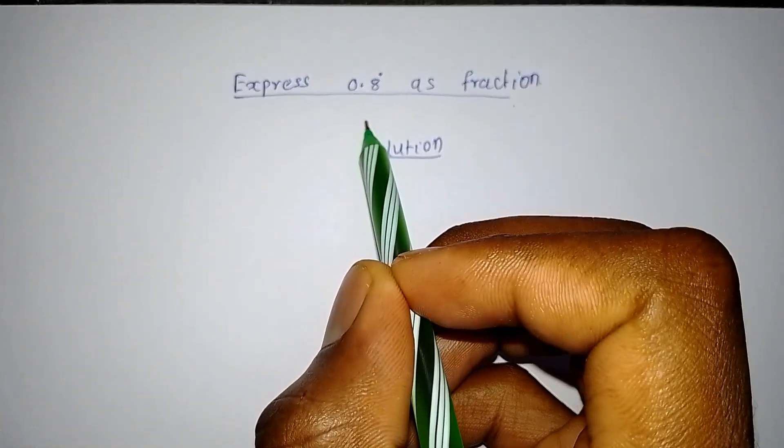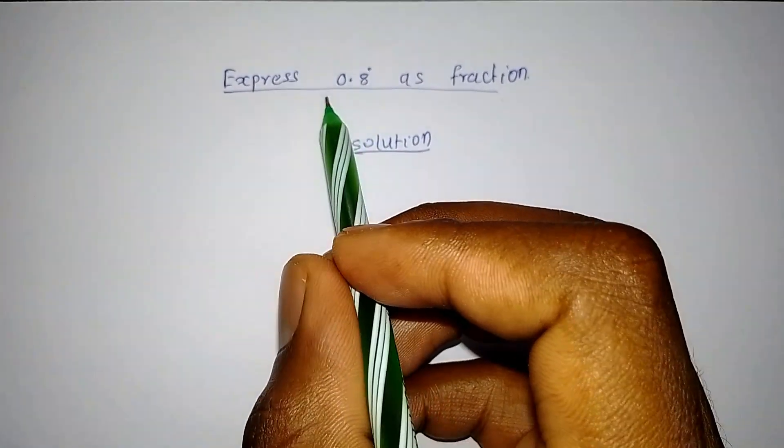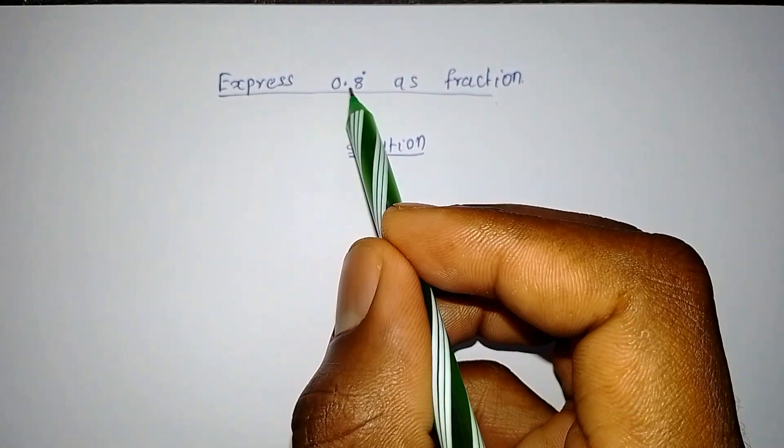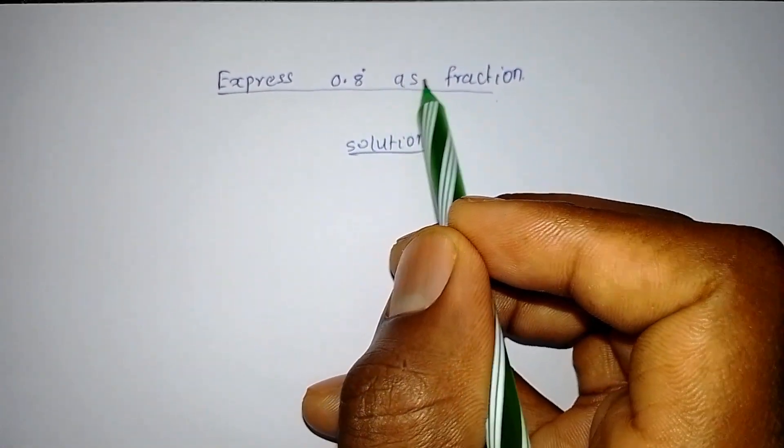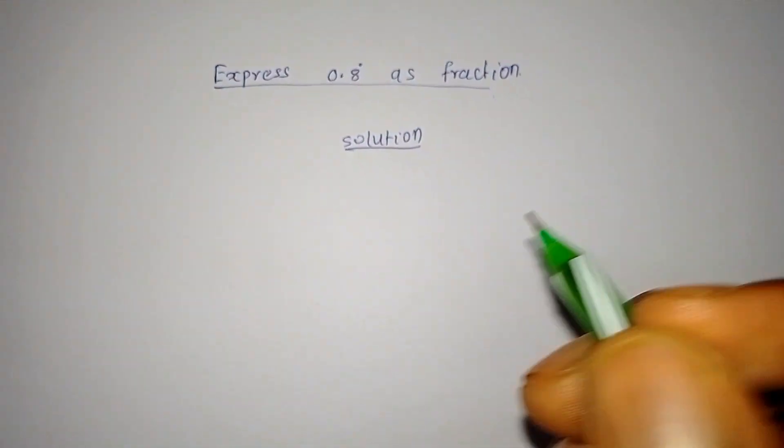I have a question about recurring decimals. You're told to express 0.8, where the 8 is recurring, as a fraction.